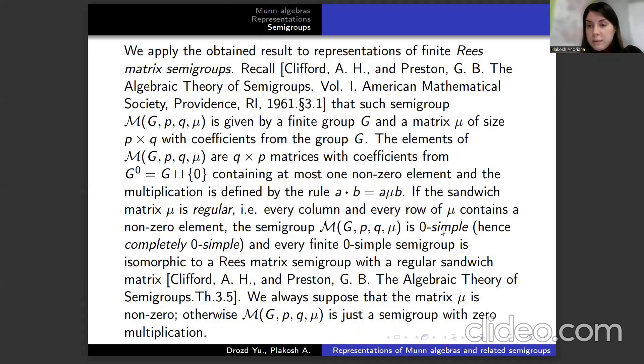If the sandwich matrix μ is regular, meaning every column and every row of μ contains a non-zero element, the semigroup M is zero-simple, hence completely zero-simple, and every finite zero-simple semigroup is isomorphic to a Rees matrix semigroup with a regular sandwich matrix. We always suppose that the matrix μ is non-zero, otherwise M is just a semigroup with zero multiplication.